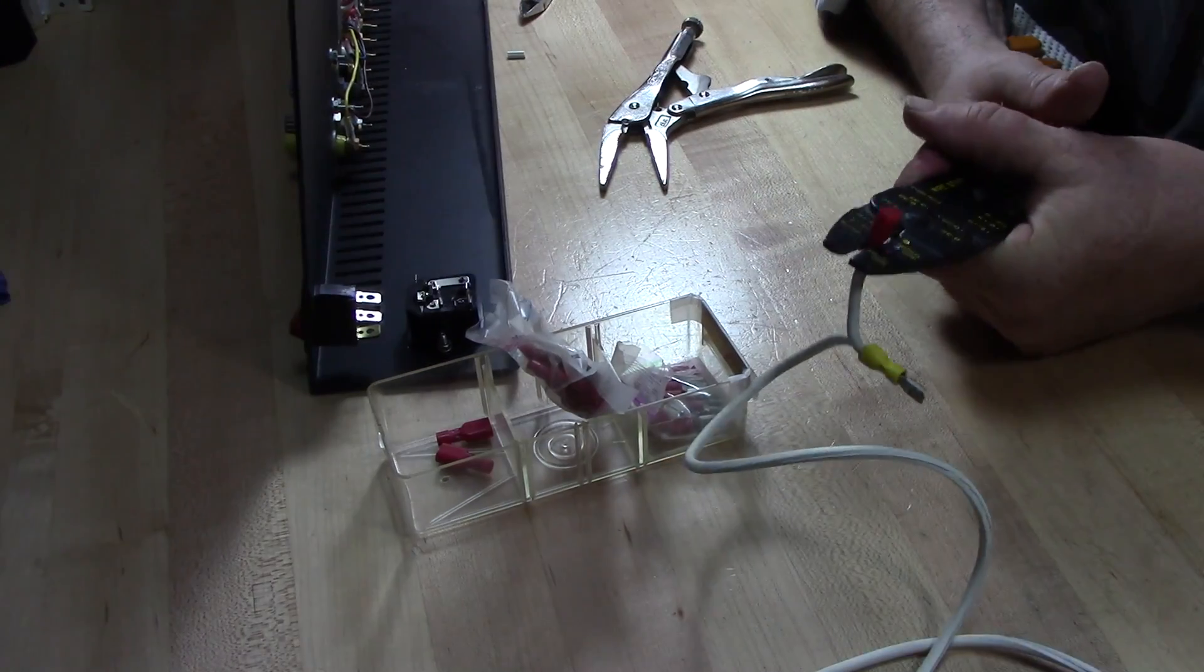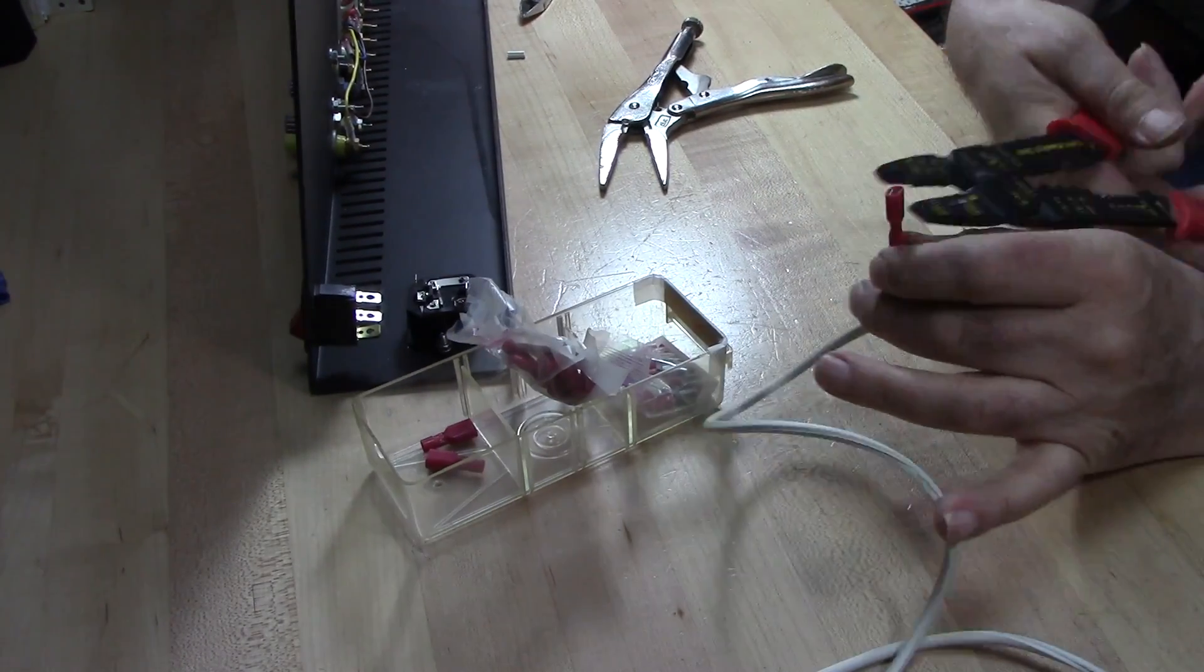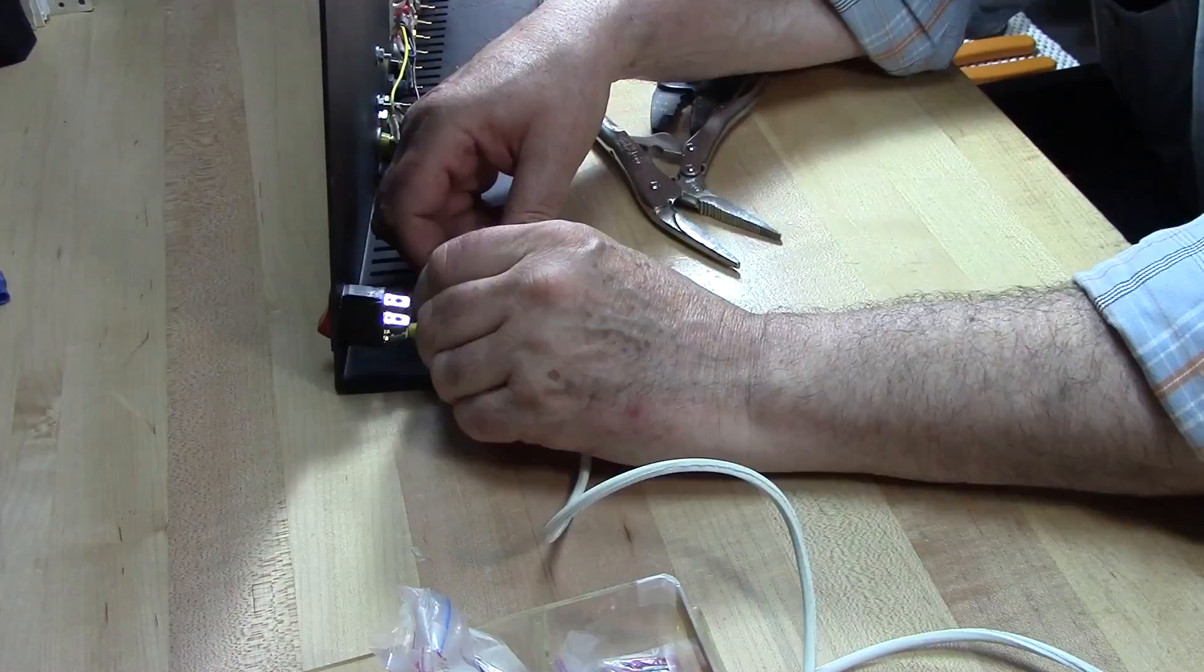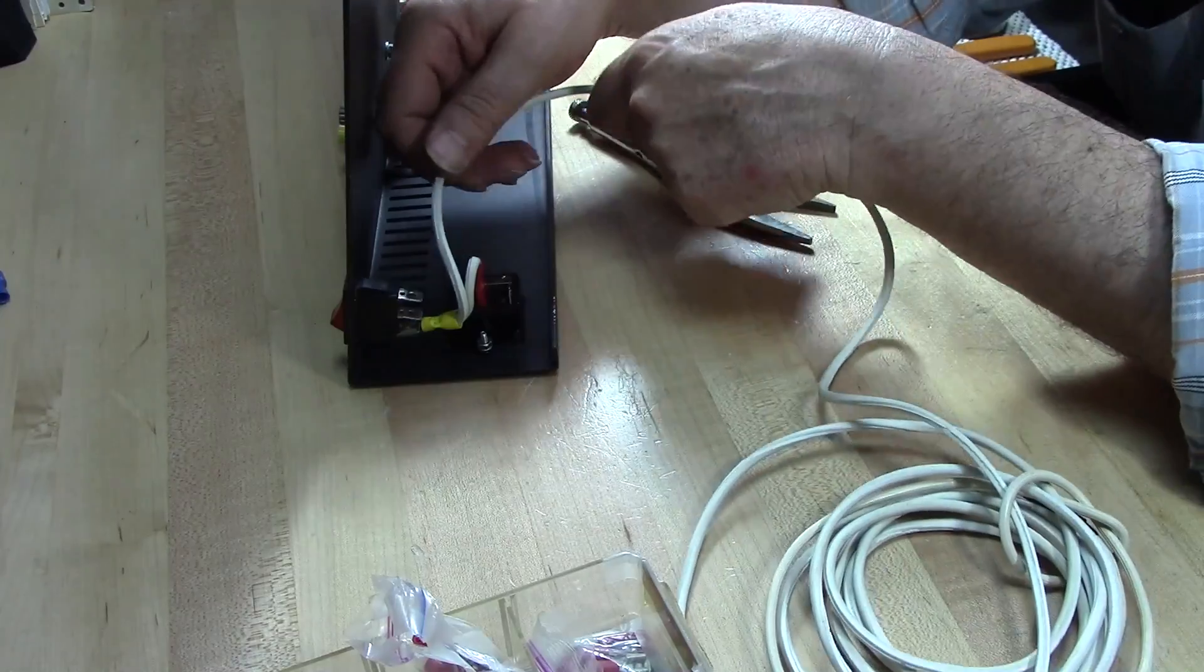I'll just crimp this. I'm not too happy about crimping these things. Let me just test the connection here. I've also got a white wire coming out of there, the white being neutral for downstream components.